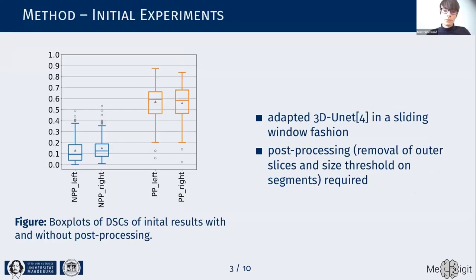In previous work, we applied a slightly adapted version of the 3D U-Net in a sliding window fashion, and found that there was a strong need for post-processing. That is, we removed some of the outer slices of our predictions and needed to apply a size threshold on the resulting connected components, which gave us a decent performance.